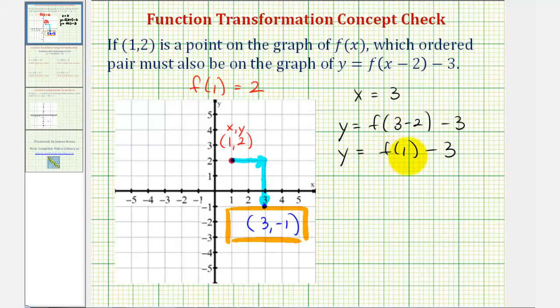And then finally, since we know f(1) equals two, we can say y equals 2 - 3, which means y equals negative one. So by subtracting three from these function values, it actually shifted the graph down three units, giving us the y coordinate of negative one.